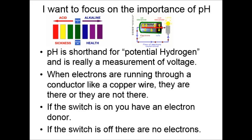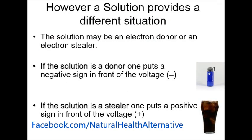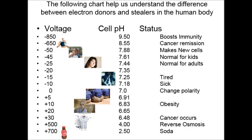pH, or potential hydrogen, is really a measure of voltage. When electrons are running through a conductor like a copper wire, they are either there or they are not. If you switch your switch on, you have an electron donor; if the switch is off, there are no electrons. Here's a way to remember it: if it is negative, it is a donor — a giver — they put a negative sign in front of it. If it is a stealer or a taker, they put a positive sign in front of the voltage. So there again, the negative is better: positive is bad, negative is good. Now let's go to the next chart to help you understand the difference between electron donors and stealers — givers and takers — in the human body.